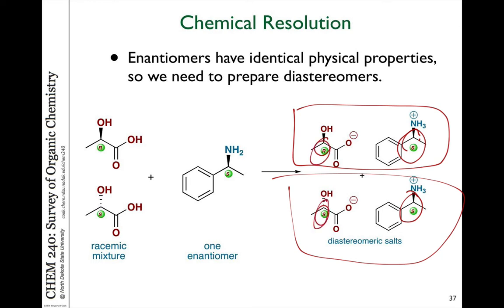In this case, these salts might have different melting points or different properties, so we could find some physical property to separate them. In order to separate or resolve enantiomers, we need to create some kind of diastereomeric relationship with something else chiral.